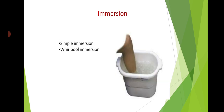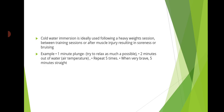Next is immersion. It is very simple — we take a tub or container filled with ice cubes and immerse the part, which can be the upper limb, lower limb, or any area. Cold water immersion is ideally used following heavy weight training sessions, between training sessions, or after muscle injury resulting in soreness. For example: one minute in, relax as much as possible, then two minutes out of the water, and repeat five times.